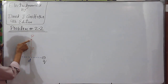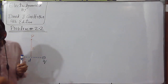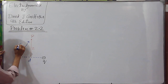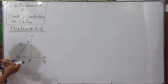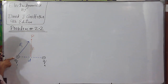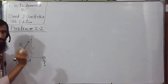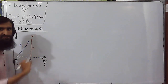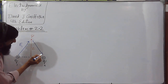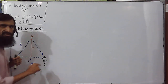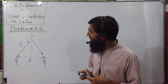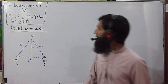The electric field at point P due to the positive charge q1 will be directed away from q1 — we name it E1. The electric field at point P due to the negative charge q2 will be directed towards q2 — we name it E2. This is because the electric field due to positive charges points away from the charge, and due to negative charges it points towards the charge.